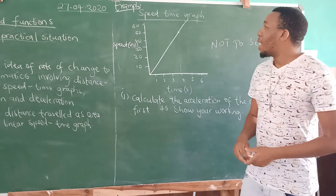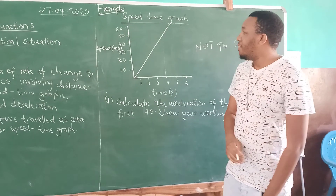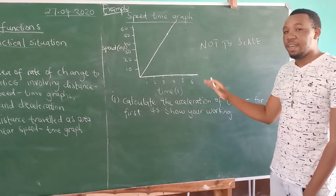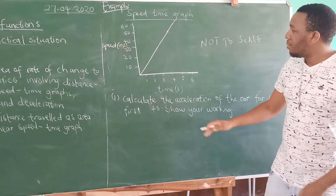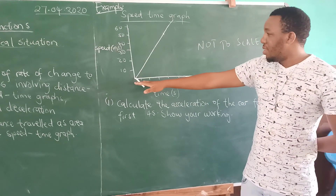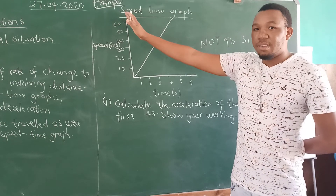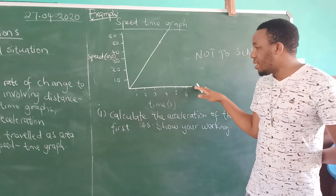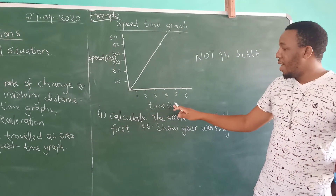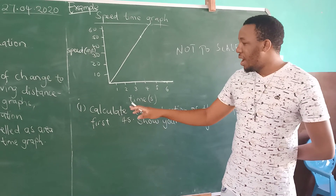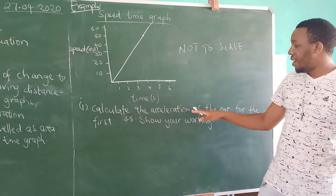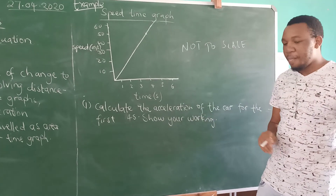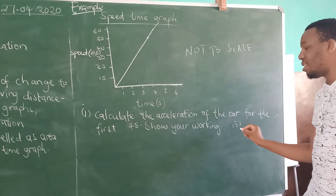So let's get started. Example number one. You have this graph, which I got from a physics question table, but it's still helpful for this objective. The y-axis represents speed in meters per second, and the x-axis represents time in seconds. The question is: calculate the acceleration of the curve for the first four seconds. Questions like this can amount to about three marks.